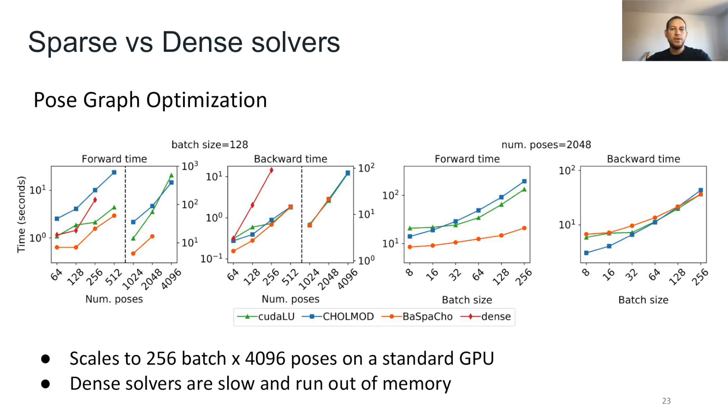We find that on a standard GPU, Theseus with a sparse solver is much faster than a dense solver, and we also find that sparse solvers require significantly less memory, allowing them to scale to much larger problems.